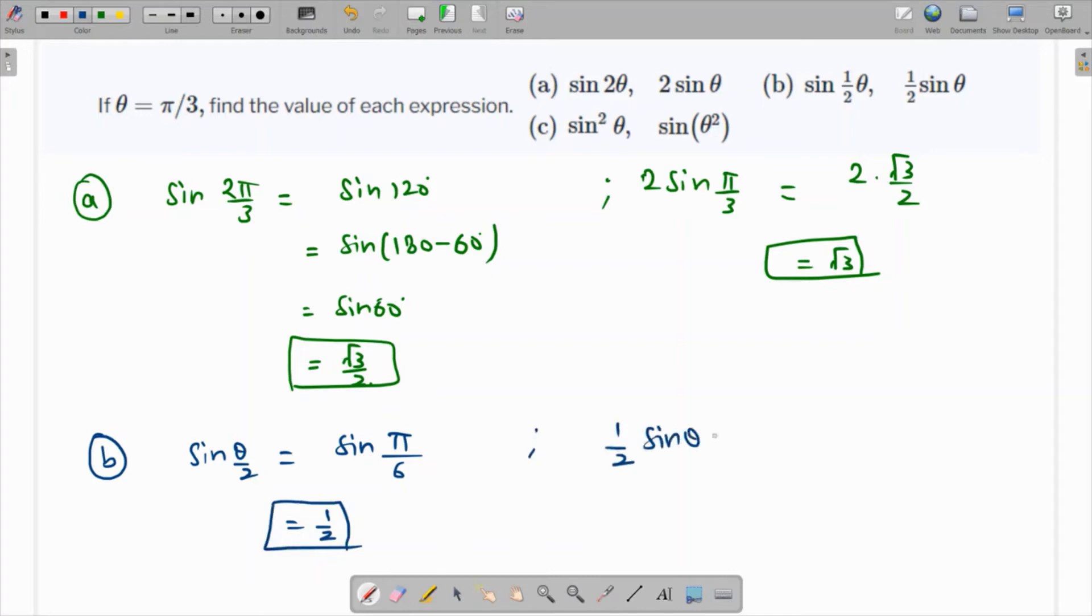Likewise, 1/2 sine theta is nothing but 1/2 sine of π/3, which is √3/2, so this is coming as √3/4.